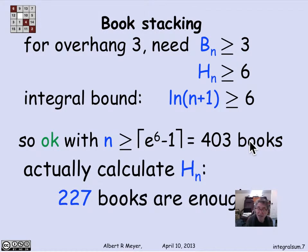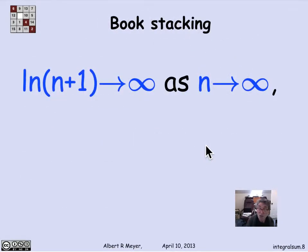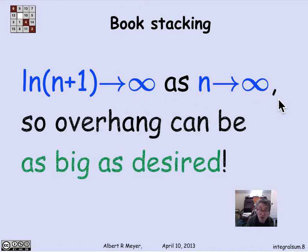If you do the actual calculation instead of the estimate, it turns out that 227 books are enough. So this estimate's a little off, but for our purposes, it tells us a dramatic fact, which is that we know that log(n+1) approaches infinity as n approaches infinity. And that means that with enough books, I can get out as far as I want. You tell me how many book lengths you want to be out, I'll use the log n formula to calculate how many books I need to get that far out.